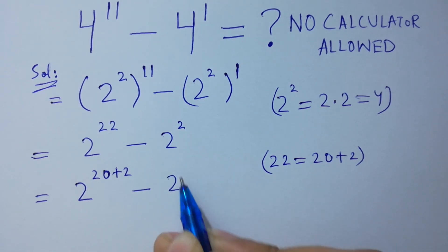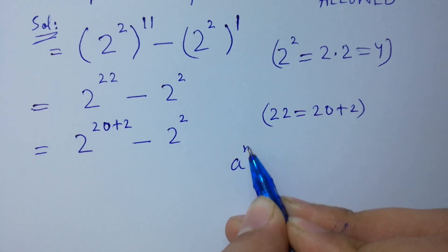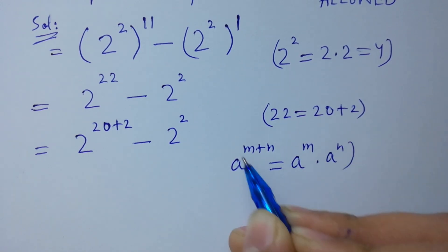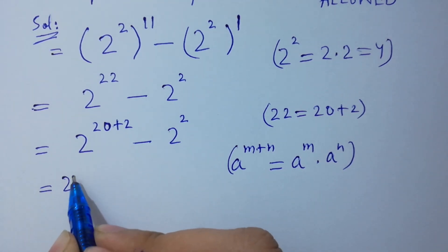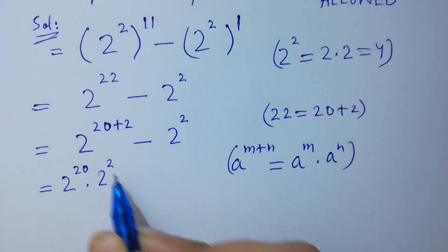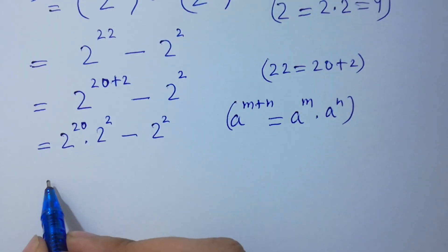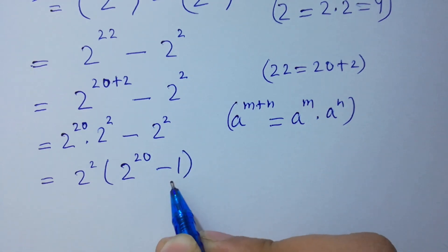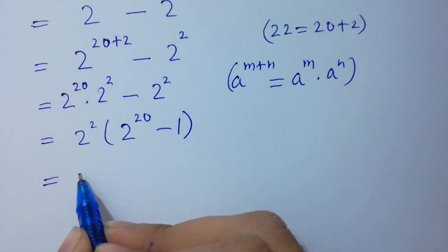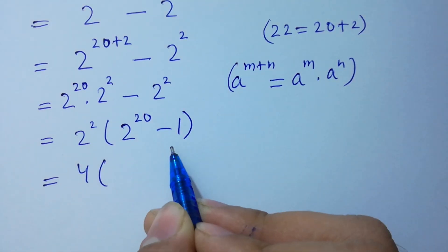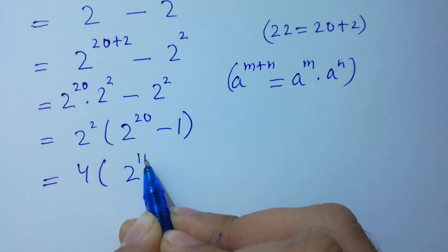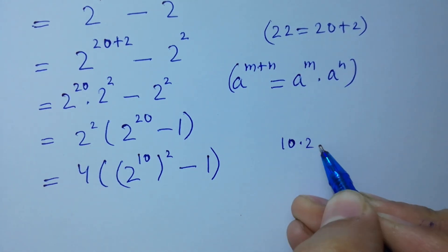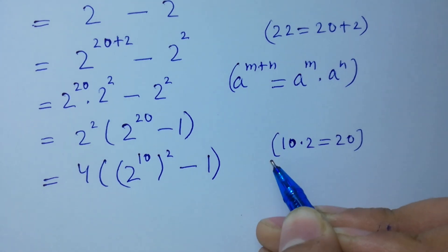Since a to the power m plus n equals a to the power m times a to the power n, it will be 2 to the power 20 times 2 to the power 2, minus 2 squared. We can factor out 2 squared, giving us 2 squared times 2 to the power 20 minus 1. Next, 2 squared times 2 to the power 20 minus 1 is the same as 2 to the power 10, to the whole power 2, minus 1, since 10 times 2 equals 20.